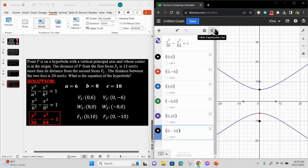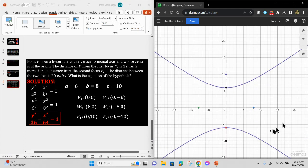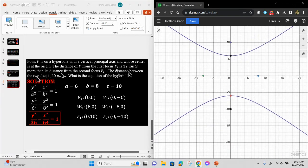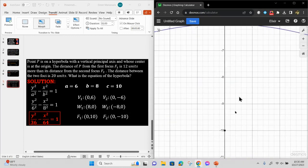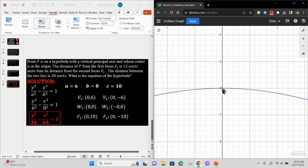Ang sabi dito, the distance between the two foci is 20 units. So dapat 20 units ang mabibilang natin. Bilang tayo, magmula dito sa baba: 1, 2, 3, 4, 5, 6, 7...